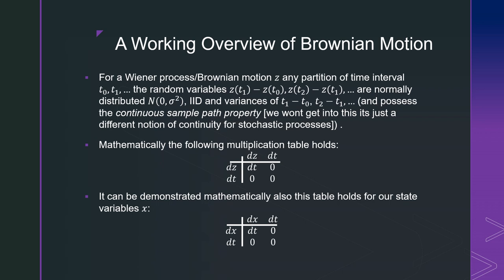Mathematically, the following multiplication table between each one of these differentials holds. That is, if we multiply one change in Brownian motion by another change of Brownian motion, you'll get a change in time. If you were to do that by multiplying a Brownian motion by a change in time or time by another time, you're going to get zeros here.